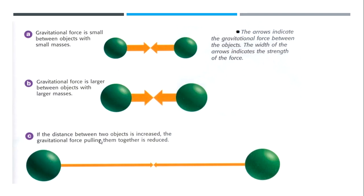The arrows here indicate the gravitational force between the objects. If the masses are small, gravity will be small. If the mass is larger, gravitational force is going to be larger. If the distance between two objects is increased, the gravitational force pulling them is also reduced.